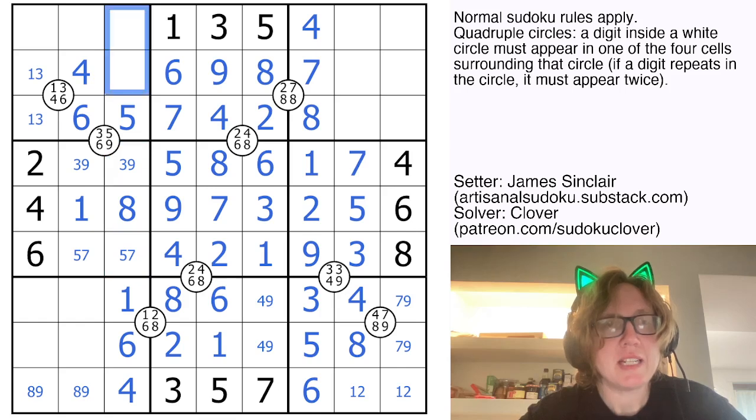Here I need, oh, I've got a five already, so that will take care of the five, seven. Here I need three, two, and nine. Neither of those can be three because there's a one, three pair here.